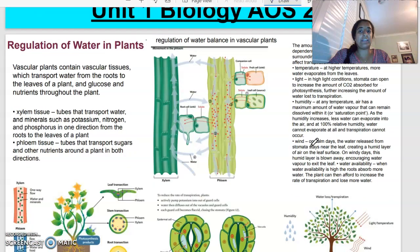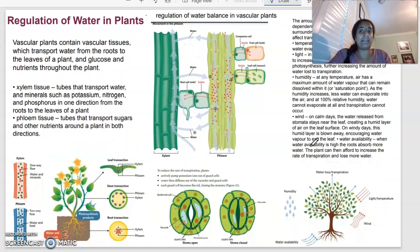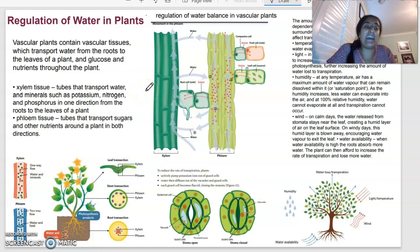So we're going to start looking at regulation of water in plants. In particular, we are looking at vascular plants. So remember, vascular plants are basically plants that have vascular tissue. So they're able to transport water from the roots to the leaves and glucose as well and nutrients throughout the plant as required.